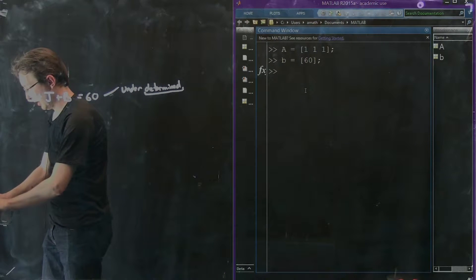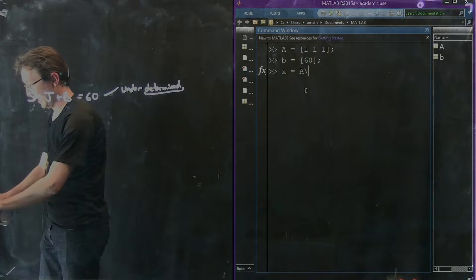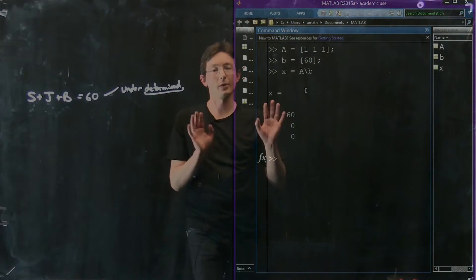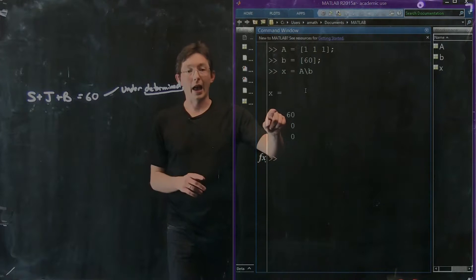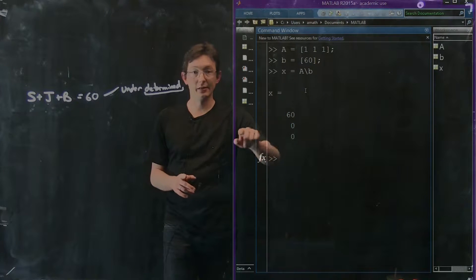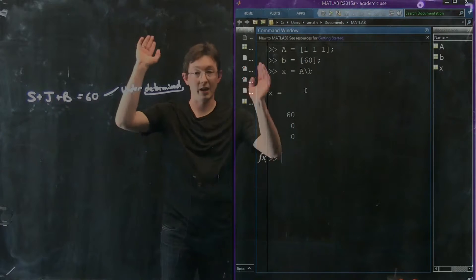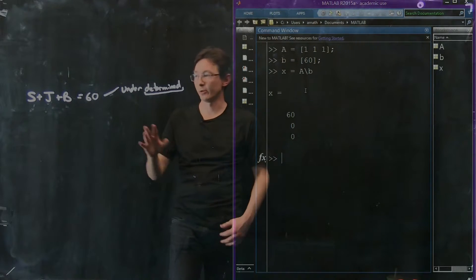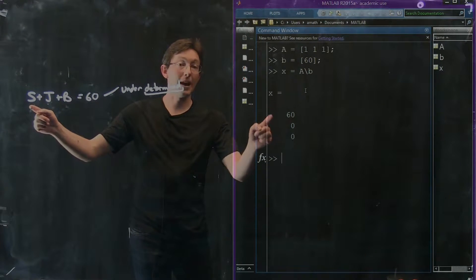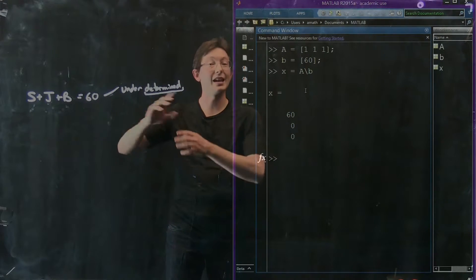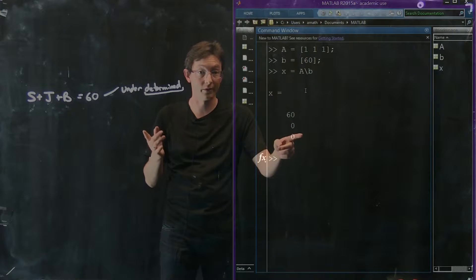So if I do X equals A backslash B, MATLAB tells me that the right answer is X equals 60, 0, 0. So Sally is 60 and John and Bob haven't been born yet or just were born. So this is what MATLAB thinks a good answer is. And it definitely satisfies the system because there's infinitely many solutions. This is one of them.